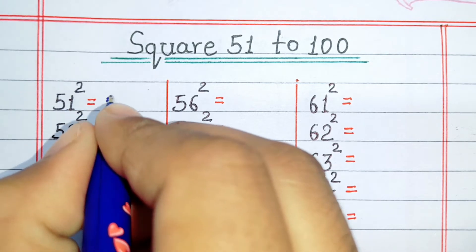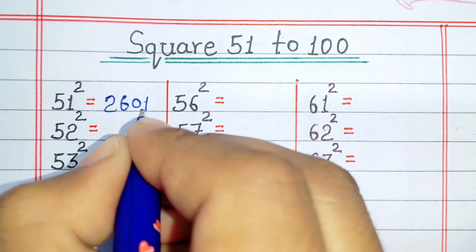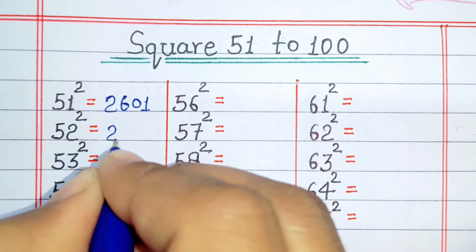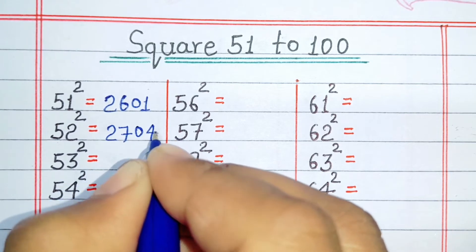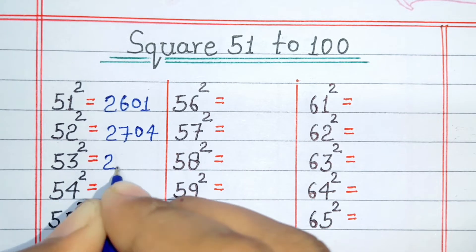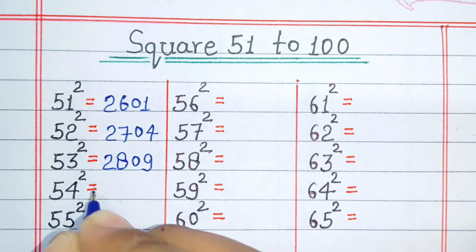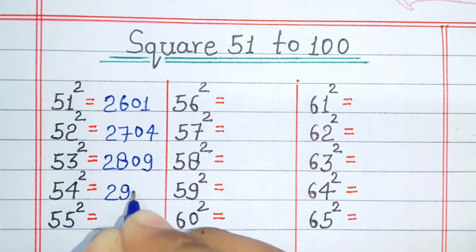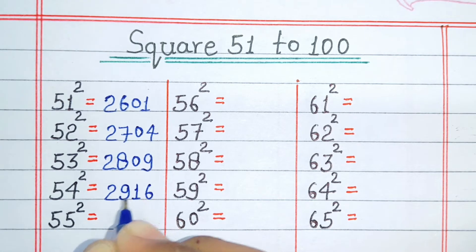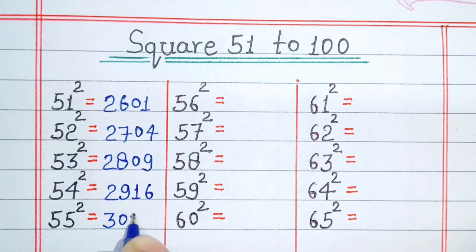So let's start it. Square of 51 is 2601. Square of 52 is 2704. Square of 53 is 2809. Square of 54 is 2916. Square of 55 is 3025.